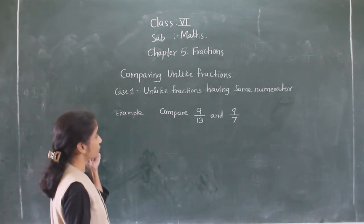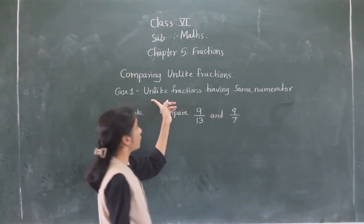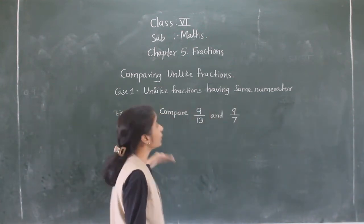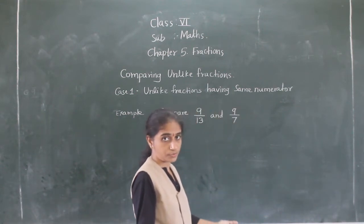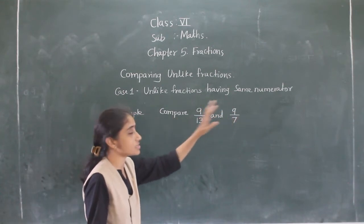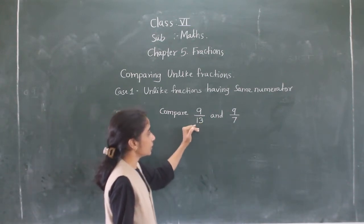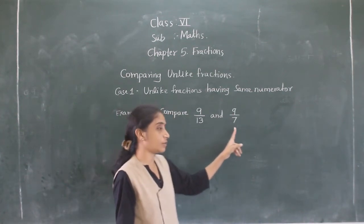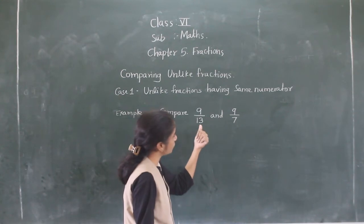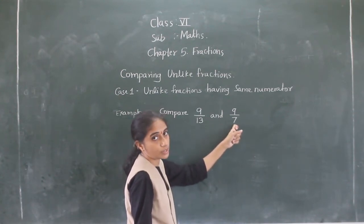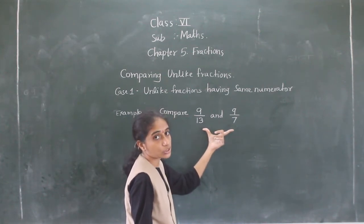Let's learn comparing unlike fractions. Case 1: unlike fractions having the same numerators. Now this fraction is an unlike fraction. Why? Because its denominators are different — the denominator here is 13 and the denominator here is 7. So the denominators are different, and this fraction is called an unlike fraction.